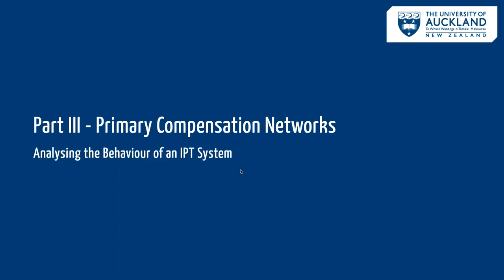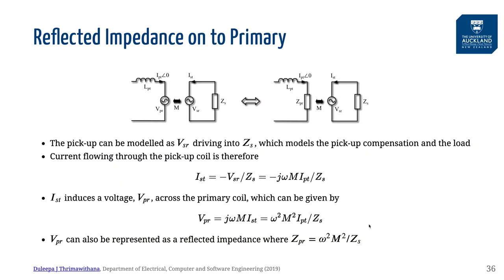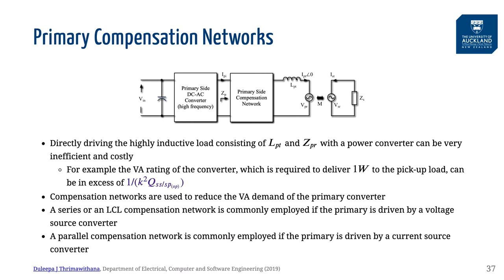Now that we know why it is essential to compensate the pickup coil, let's investigate the reasons for compensating the primary coil. In order to understand how the primary behaves, let's represent the compensated pickup and its attached load as an impedance that reflects back onto the primary coil in series with it. The value of this reflected impedance can be given by this expression. Directly driving the primary coil through the inverter requires the inverter to source a large amount of VA in order to transfer real power to the load. To deliver one watt, the inverter needs to source in excess of 1/k² times the operating Q of the pickup.